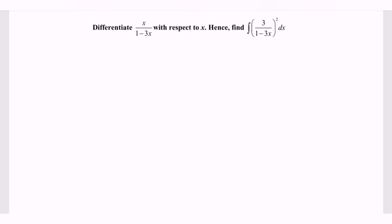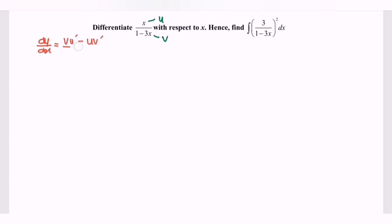So Part 1, differentiate the expression with respect to x. Let's denote x as u and 1 minus 3x as v. By referring to the quotient rule formula, we have dy/dx which is equal to v·u prime minus u·v prime, all over v squared.